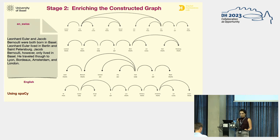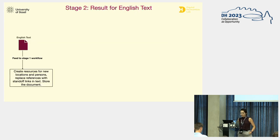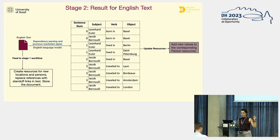These two last pipes are optional and can be turned off. The current proof of concept for these two pipes is for English only. Here you see the results of the last two pipes, which extract information from the English text. The knowledge graph is then updated by adding edges representing the extracted relations between named entities. The result of stage two is also verified with SHACL shapes before updating the graph on the triple store.